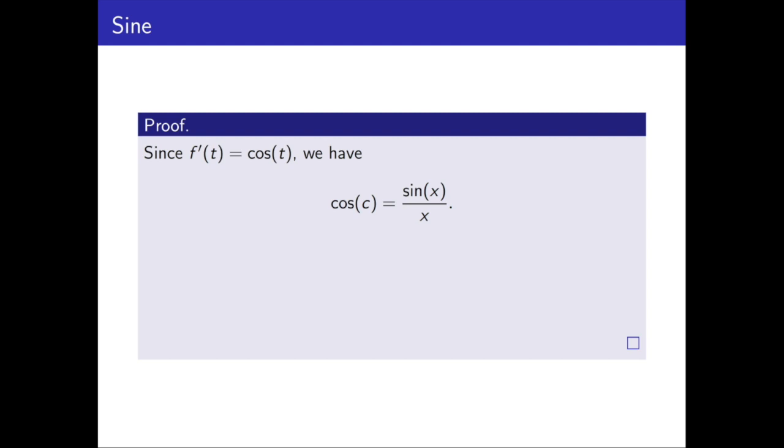Now cosine of c, well, cosine is also bounded above by 1. And in particular, since we're on the open interval between 0 and 1, cosine is actually strictly less than 1. There's no value in that interval where it reaches 1. So that means that sine of x divided by x is actually less than 1. Now we can rearrange this. We multiply by x on both sides. We know x is positive, so we don't change the direction of the inequality. And we get sine of x is less than x for all x greater than 0.